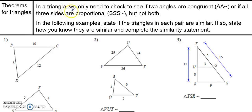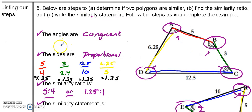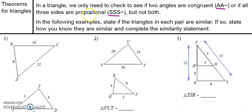Now, in a triangle, we only need to check if two angles are congruent — that's called angle-angle similarity. Or if all three sides are proportional — that's called side-side-side similarity — but not both. In the previous example, we checked all of the angles and all the sides to make sure they're proportional. But in a triangle, you just have to check if two angles are congruent and not the sides, or if all the sides are proportional and not the angles. These are called theorems or shortcuts for how we can find if two triangles are similar.